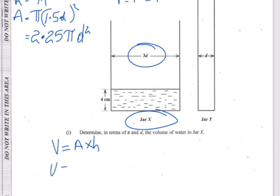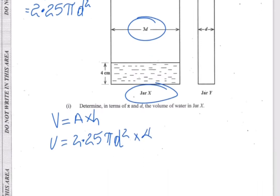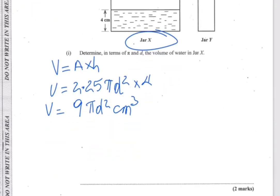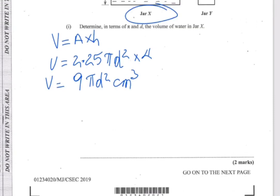Now we calculate the volume. Volume of jar X equals the area, which is 2.25πd², times the height of 4 centimeters. Multiplying 4 by 2.25 gives us 9, so the volume is 9πd² centimeters cubed. We leave our answer in terms of pi and d — that's your solid two marks.